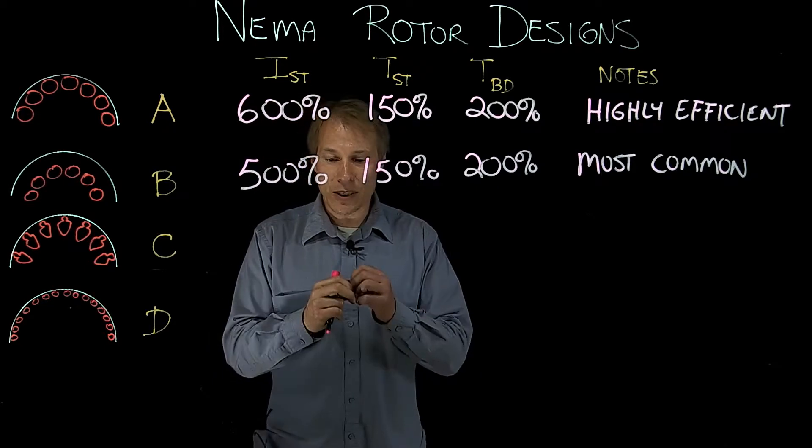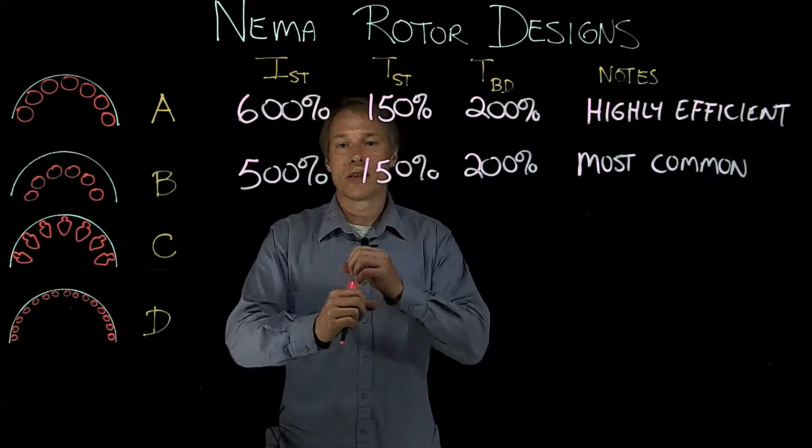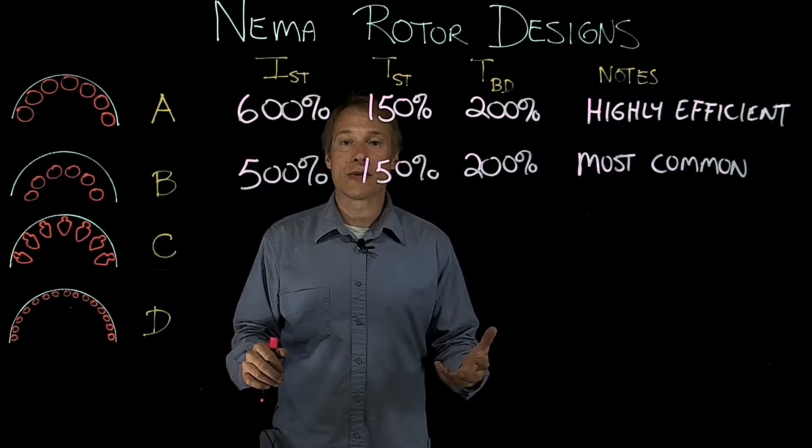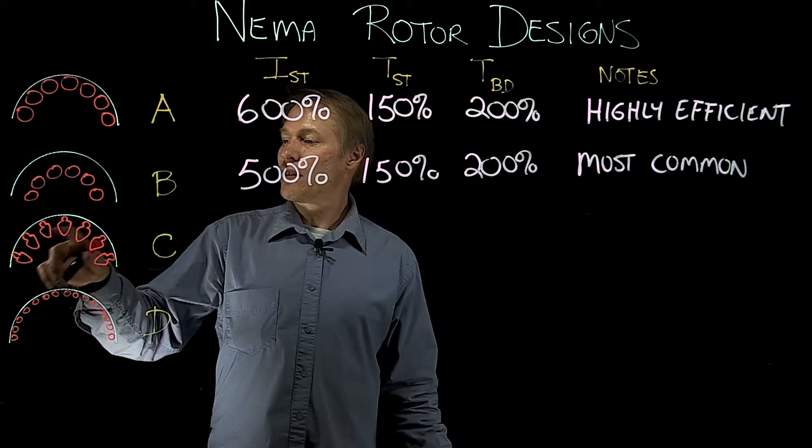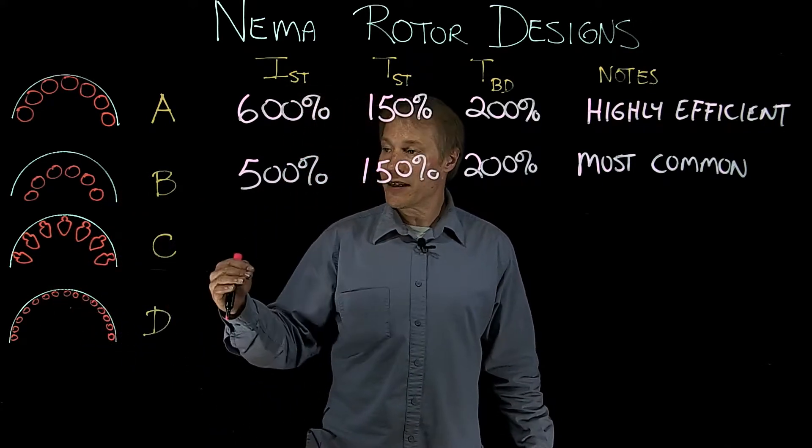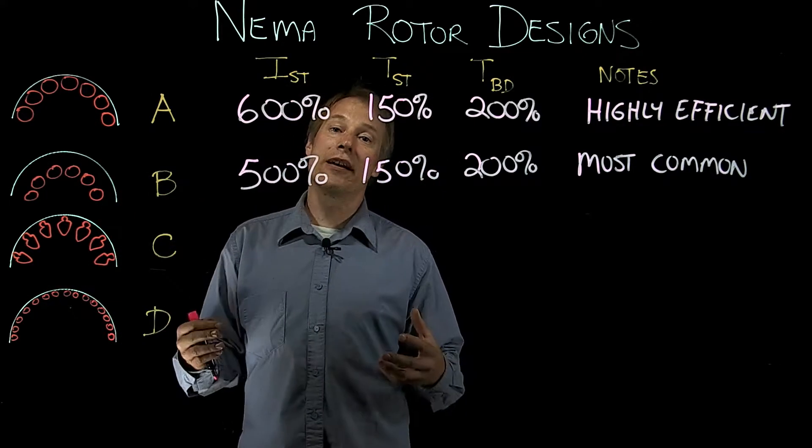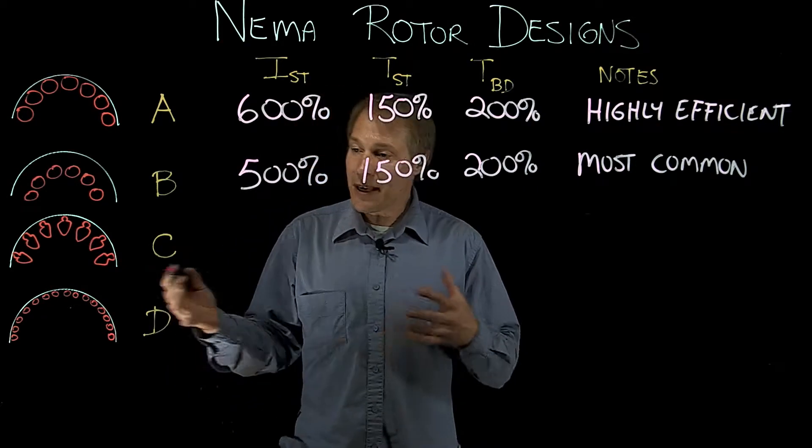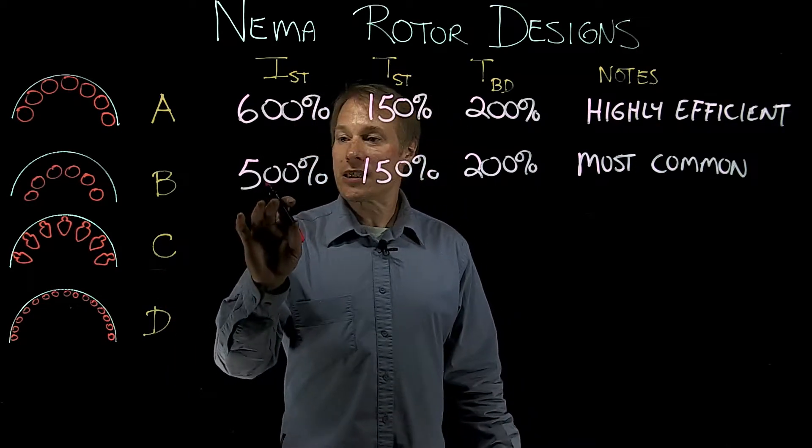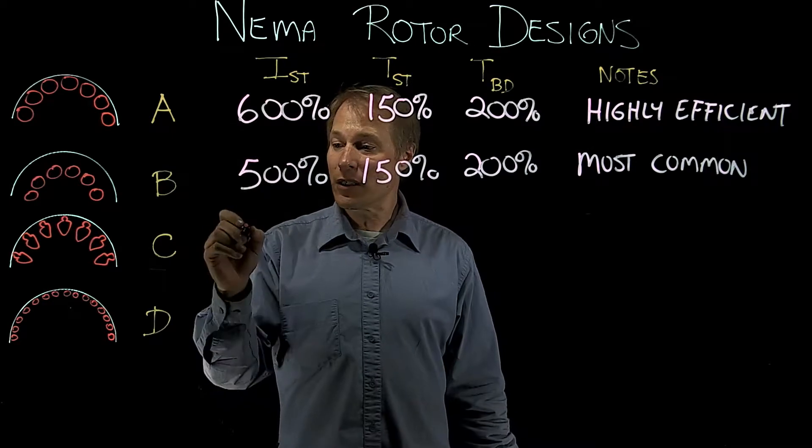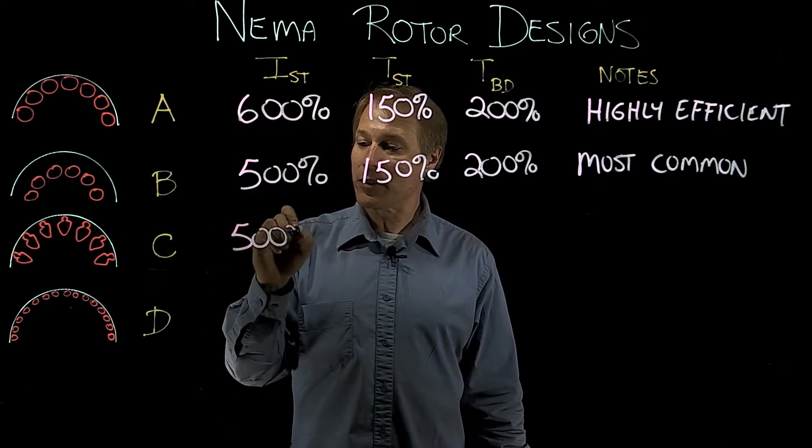Now as you can see the outer ones here are quite small, so smaller cross-sectional area gives a higher resistance. And then we have the larger ones that are embedded a bit into the rotor, so they have higher inductance. That basically evens out, so the starting current is still going to be around 500%.